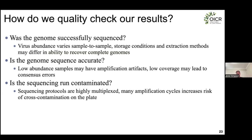Let's talk about quality control. This was a big emphasis in CanCoGen because it was an incredibly large-scale project — hundreds of thousands of genomes sequenced across Canada. We needed to ensure genome quality was equivalent no matter where it was sequenced, so we could integrate data into a national picture of how SARS-CoV-2 was mutating. We settled on three quality control criteria: whether the genome was successfully sequenced, whether the genome is accurate, and whether the sequencing run was contaminated.